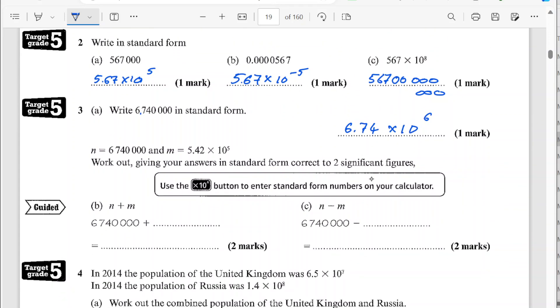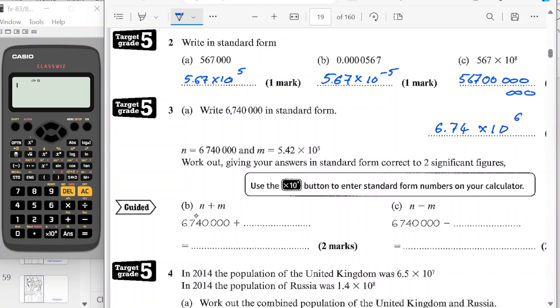Work out the answer, giving the answer in standard form to two significant figures. So I need to bring up my calculator. Okay, so work out n plus m. So in effect, we've got it written there, 6.74 times 10 to the 6 would be m. So on my calculator, I type that in as 6, 7, 4 with 4 zeros. Plus 5.4 times by 10 to the 5. So that gives me, give your answer in standard form correct to two significant figures. So that's going to be 7.3 to two significant figures, times by 10 to the power. And I've moved that 6 places.